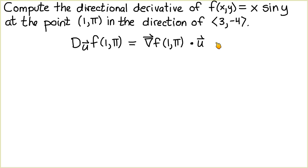In this case, the directional derivative is equal to the dot product of the gradient of f evaluated at (1,π) and the vector u. So let's begin by calculating the gradient of f. This is a vector whose first component is the partial derivative of f with respect to x, which equals sin(y).